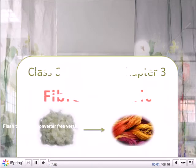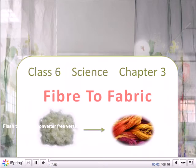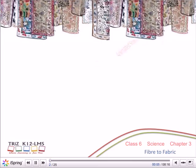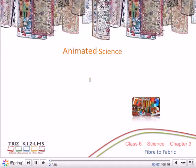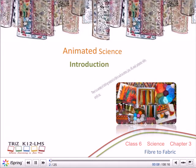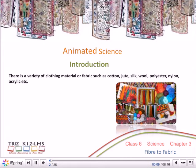Class 6 Science Chapter 3: Fibre to Fabric. There is a variety of clothing material or fabric such as cotton, jute, silk, wool, polyester, nylon, acrylic, etc.